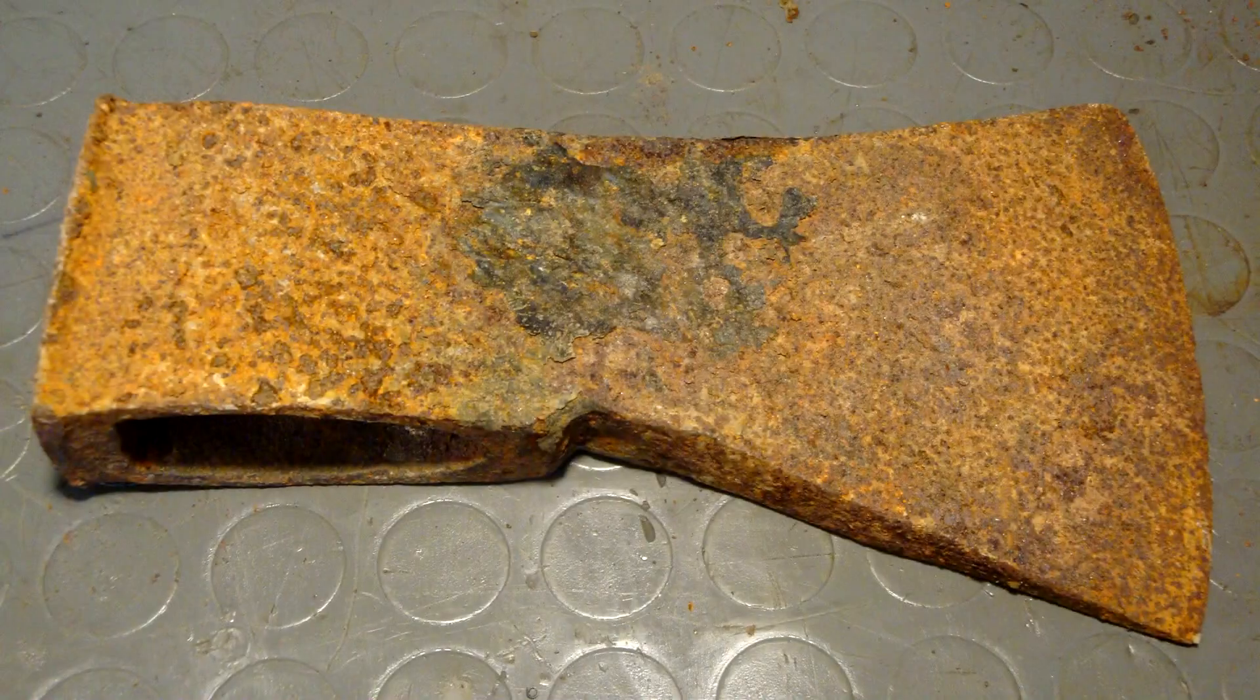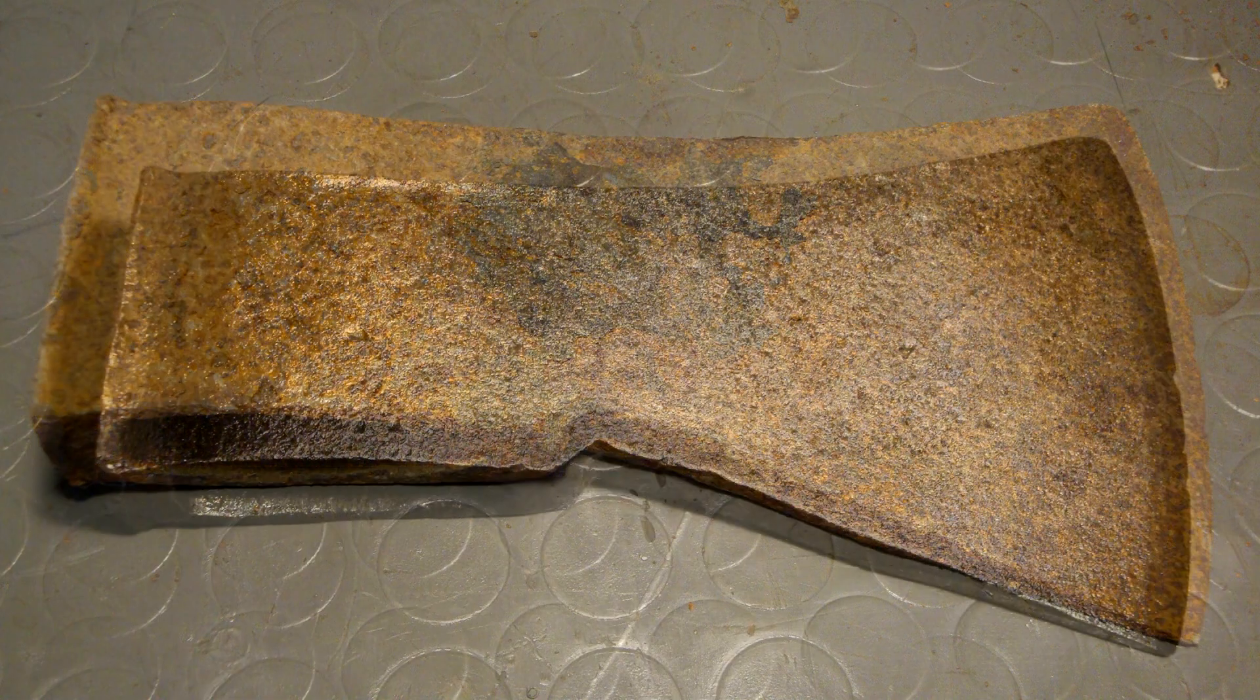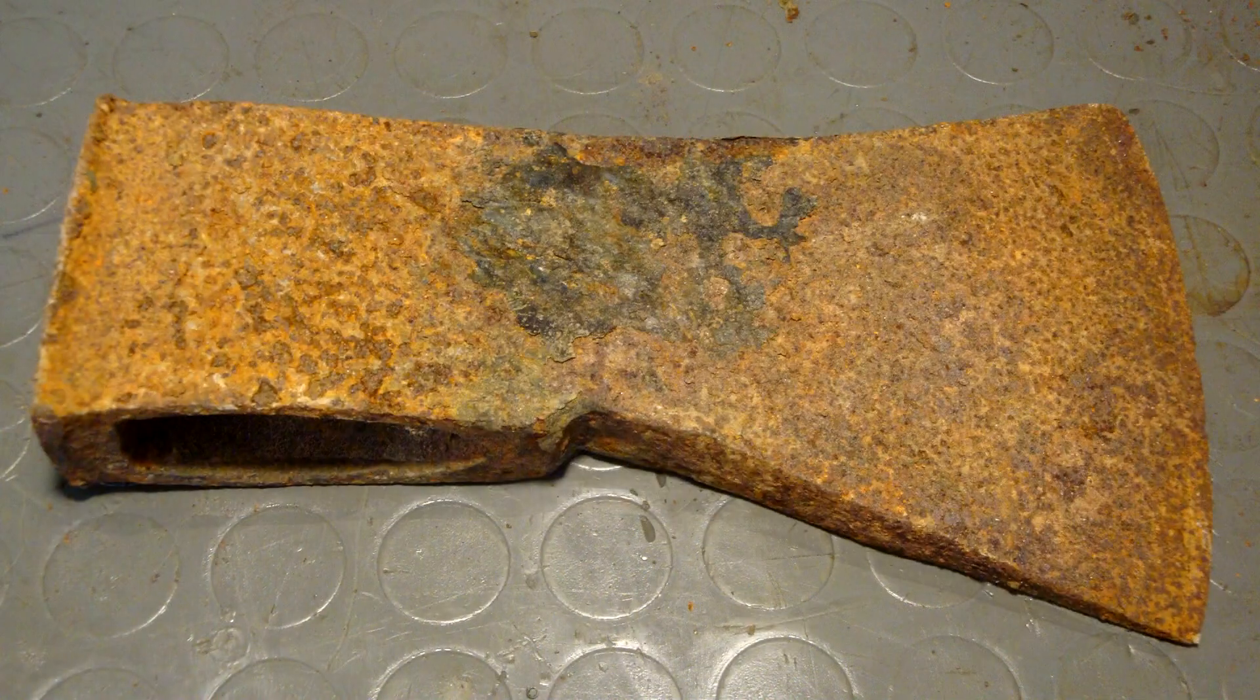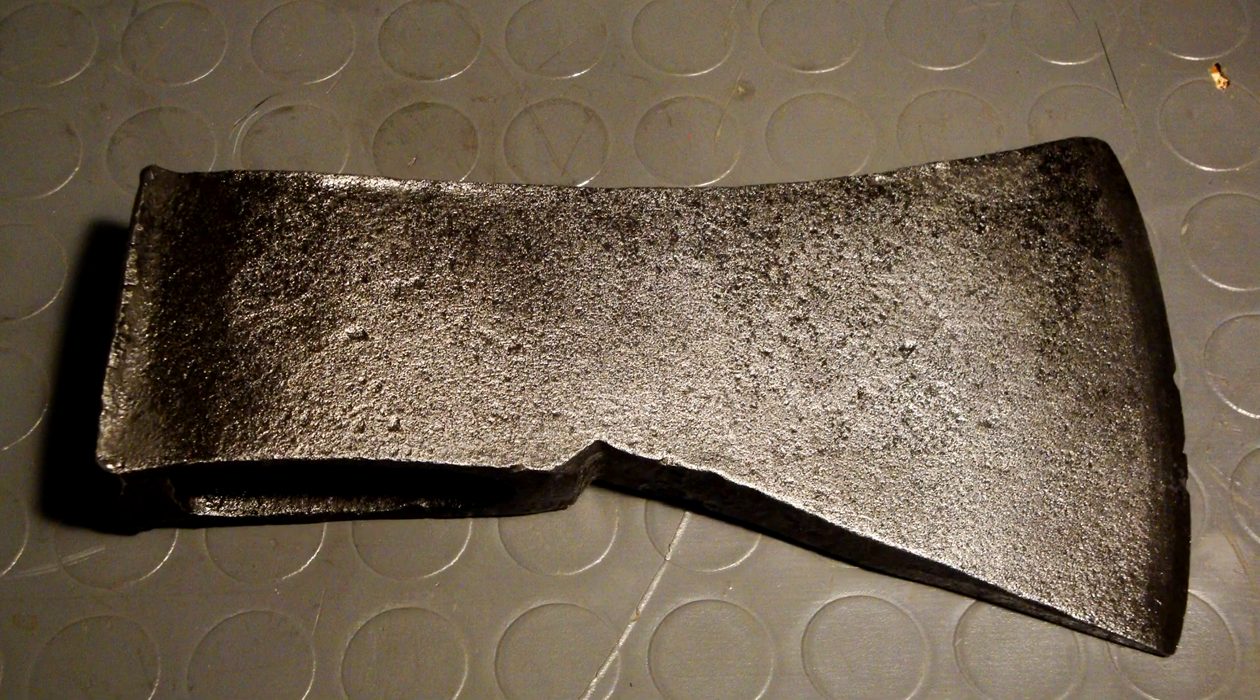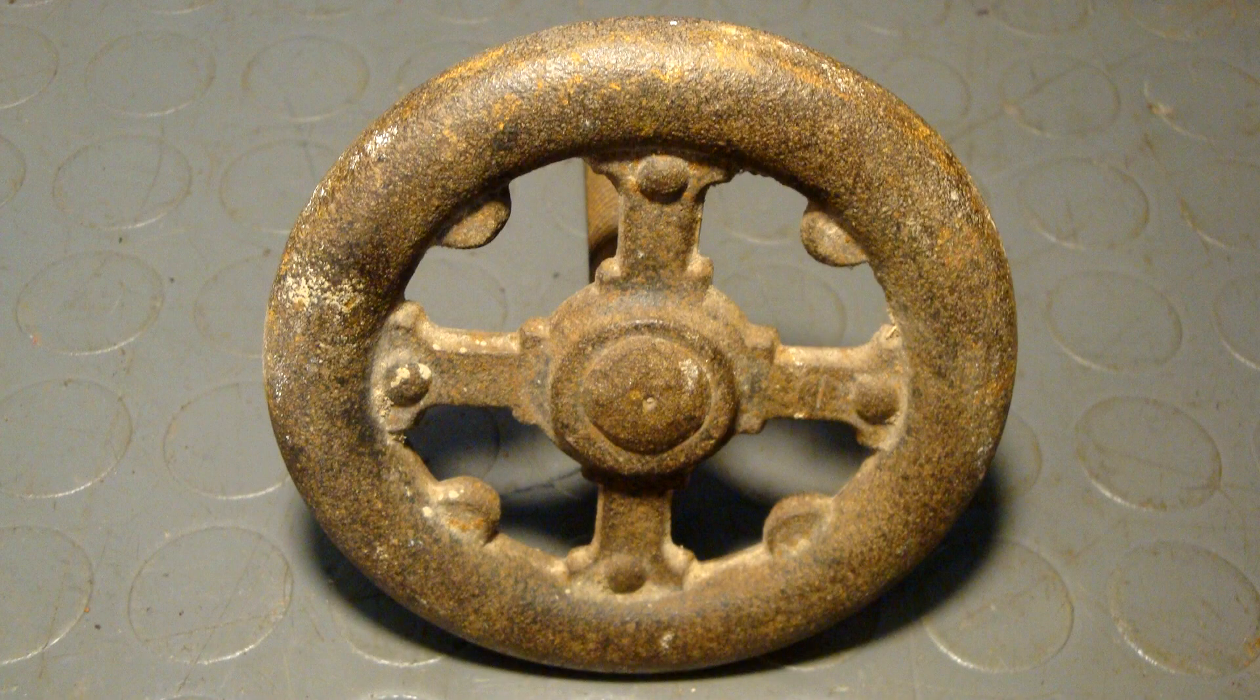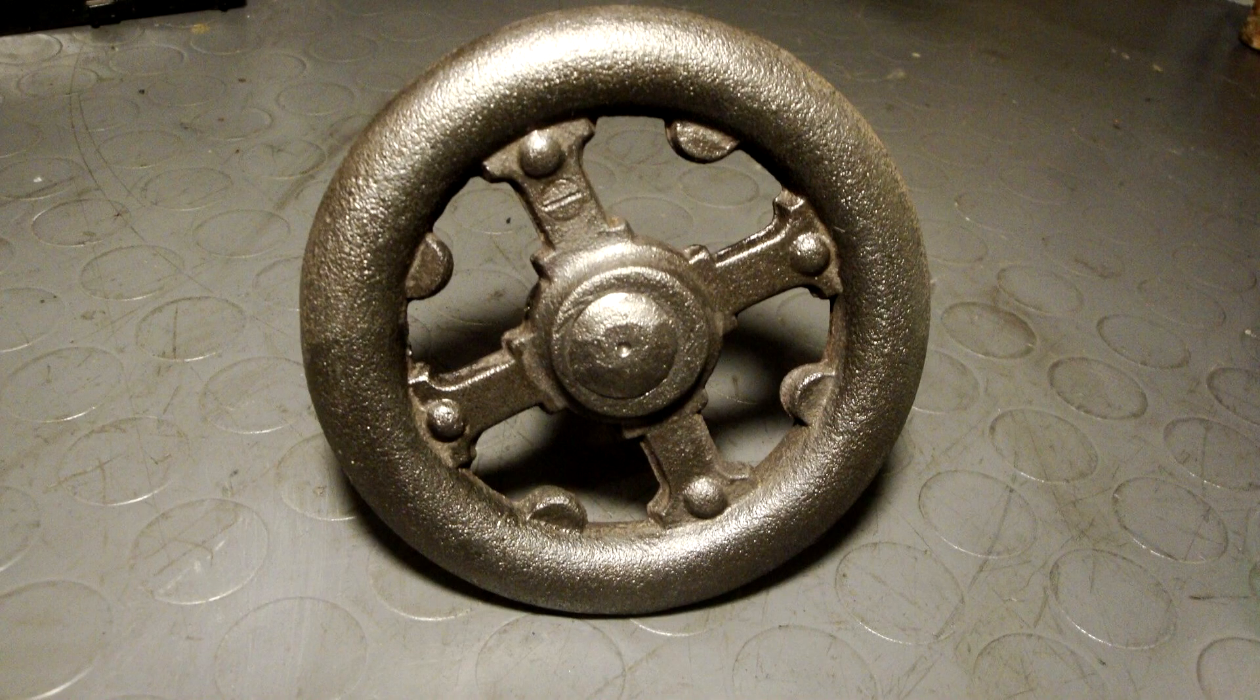And here is a little before and after comparison of the electrolysis process. First the axe head made of forged steel, I guess from around the middle of the 20th century, treated at 40 amps for about eight hours. And here is a cast iron hand wheel manufactured around the turn of the century and it was inside the tank for four hours at again around 40 amps of current.